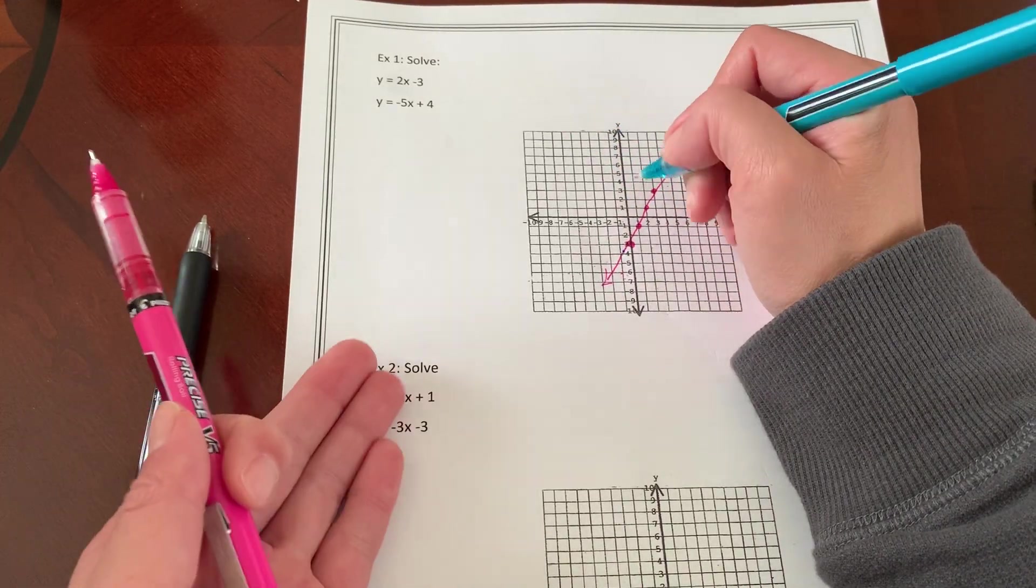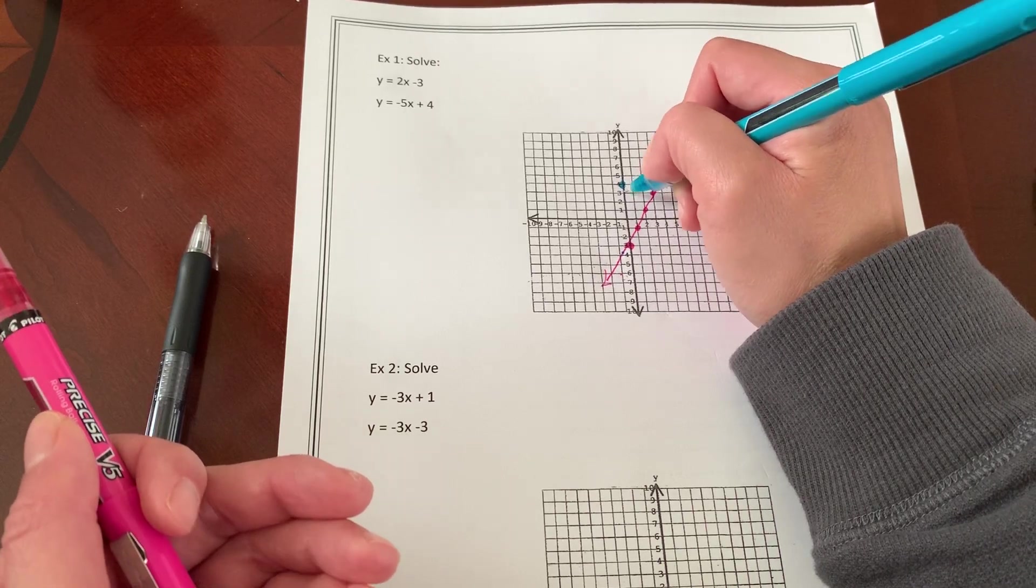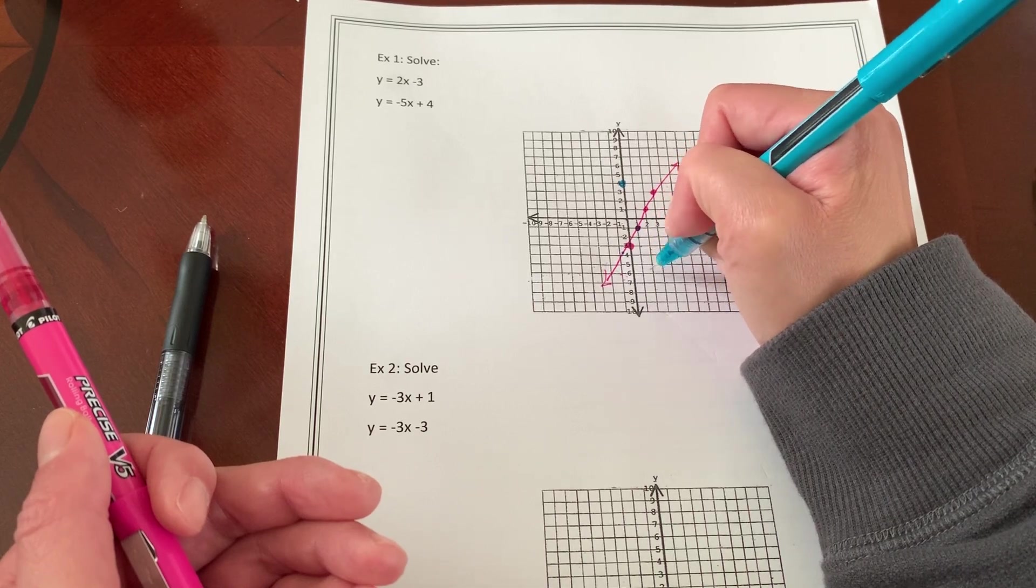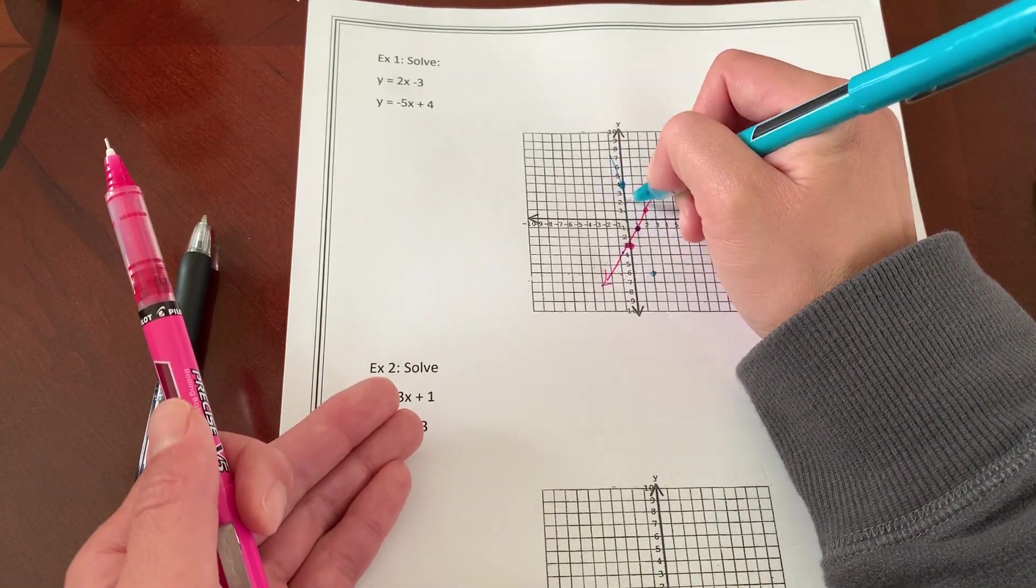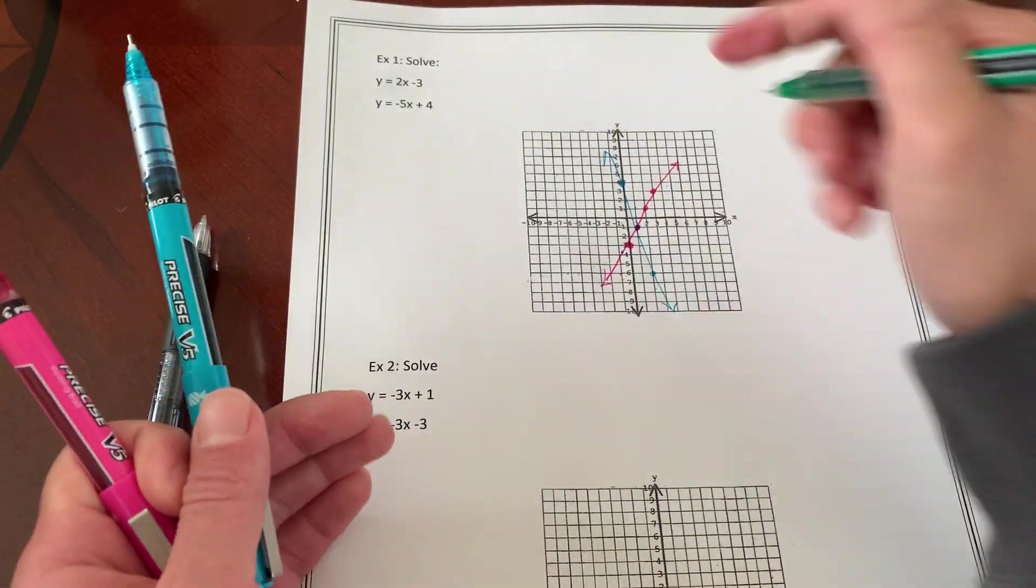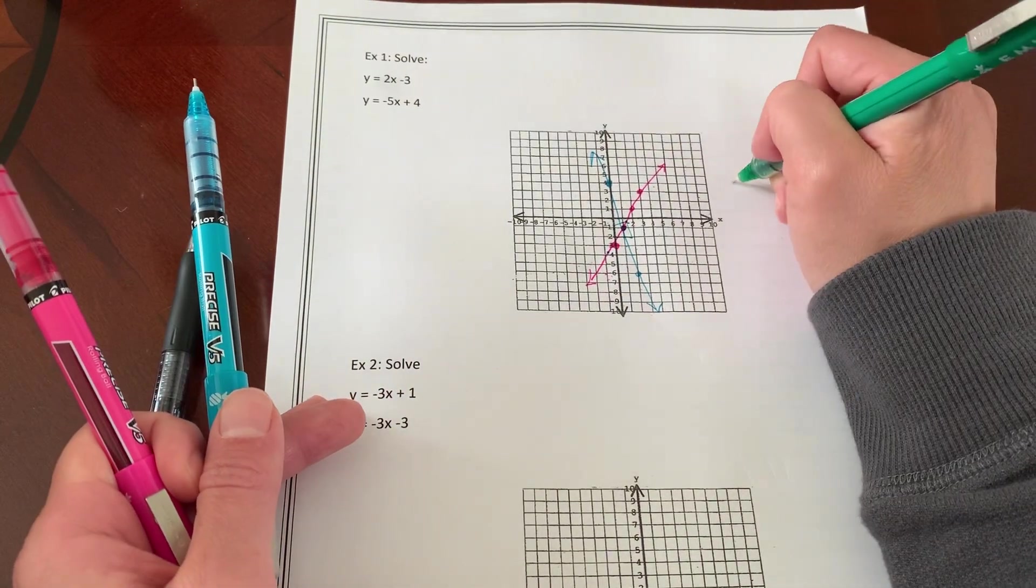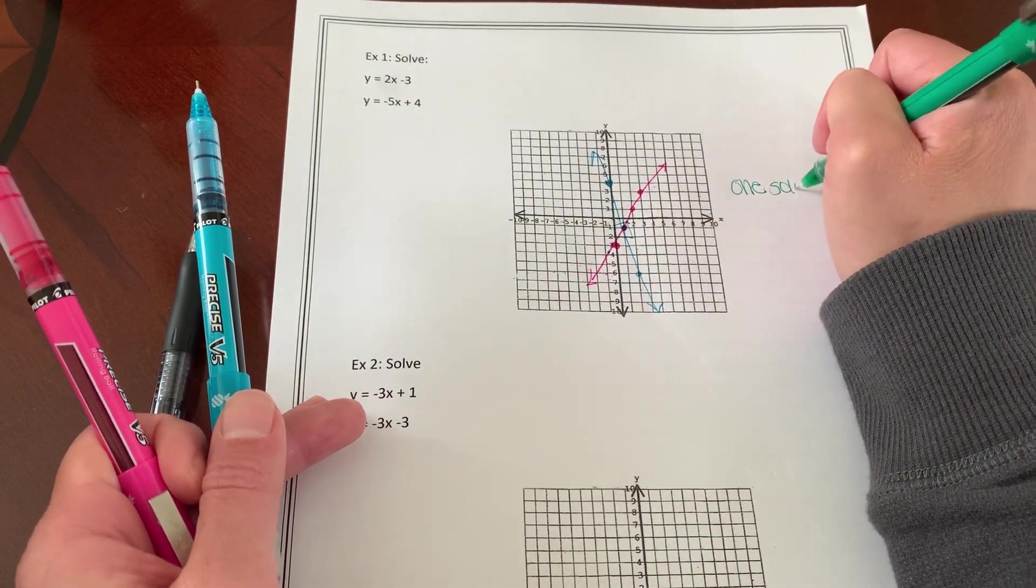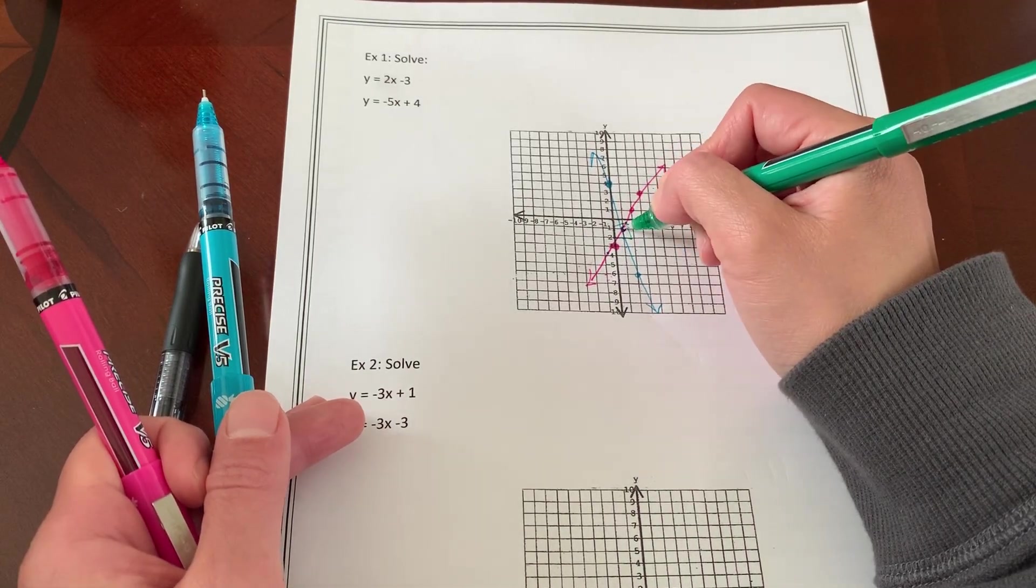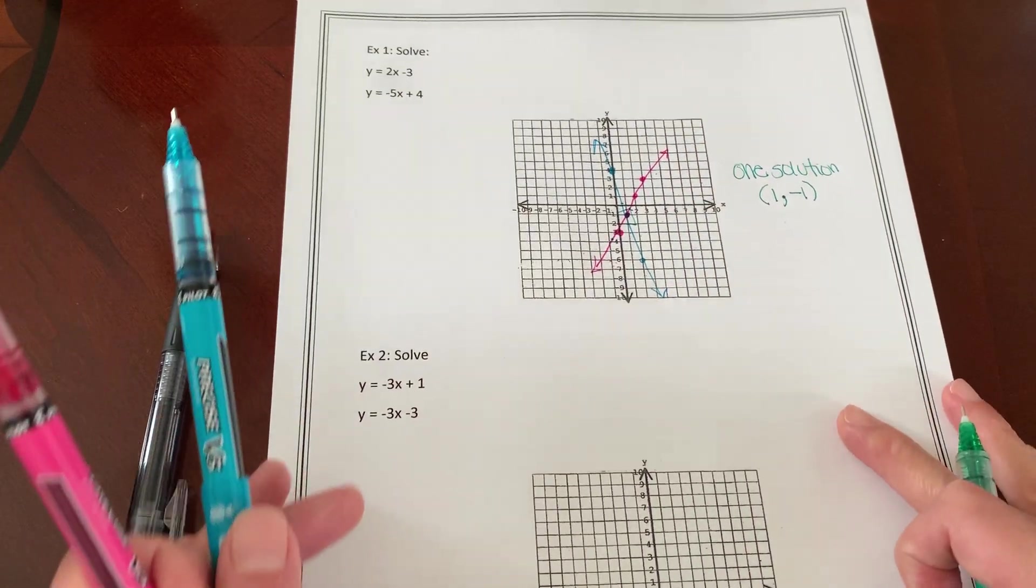Okay, so I'm going to graph my next linear equation. So I have positive four, and I'm going to go down five, one, two, three, four, five, right one. Down one, two, three, four, five, right one. Okay, so how many solutions do you have here? Do they cross? Yes, they do. They cross right there. So I have one solution, and they cross at one negative one.